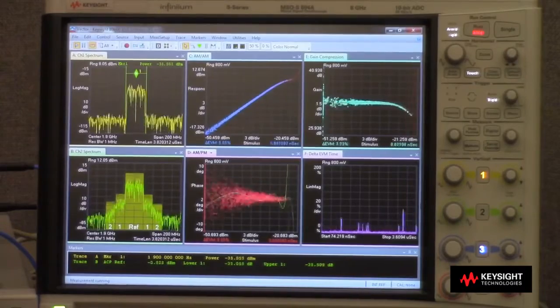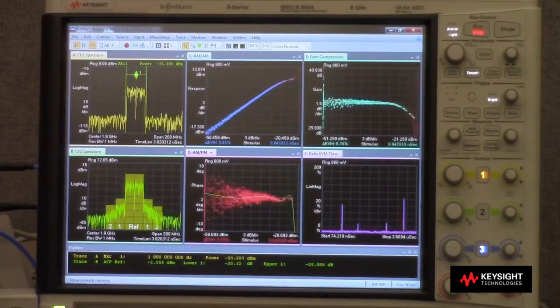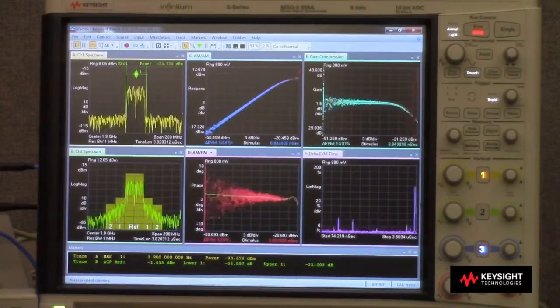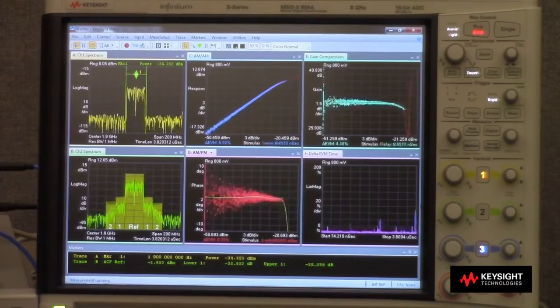Also in the lower right we can see delta EVM and this provides a delta measurement in the input and output signals to provide what type of error we're seeing.